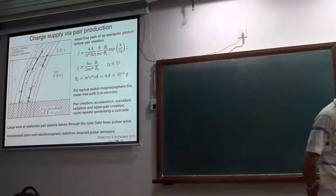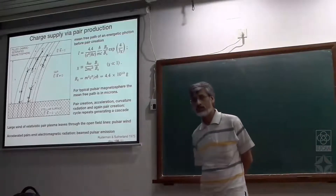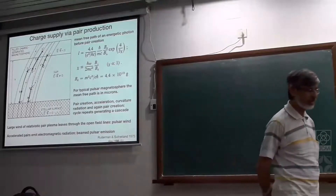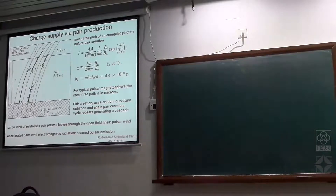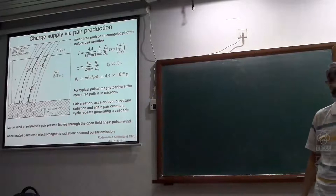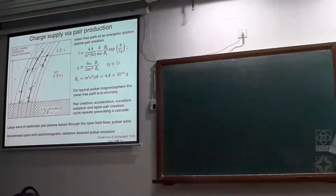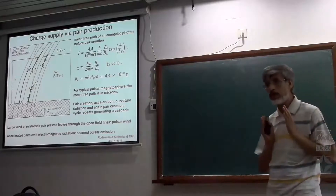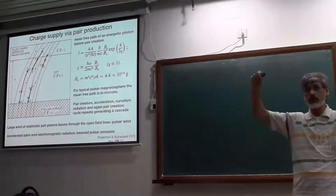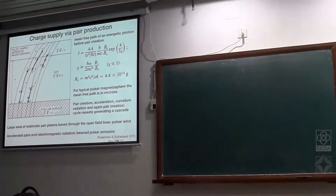Another thing noted: if you have this kind of accelerator in the pulsar magnetosphere, you very quickly accelerate particles to very large energies, giving relativistic motion. Relativistic motion causes the emission from the particles to be directed along the velocity of the particle. Since the particles are practically moving along the field lines, you have beams of emission propagating along the field lines locally.